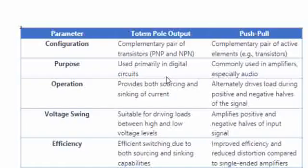The intention of these configurations is that totem pole output and push-pull can both be used in digital circuits. The major difference between them is that push-pull can give more drive current, which is why it is used in amplifier configurations. Both can sink as well as source, but push-pull has higher capability — that is the major advantage.